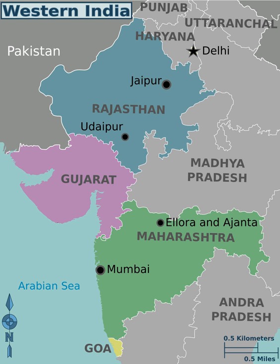The region then experienced great upheavals during the struggle for Indian independence. Gandhi's Dandi March took place in Gujarat. The region became part of independent India in 1947, and the present state boundaries were drawn based on linguistic considerations in 1956.